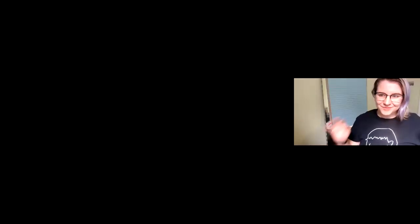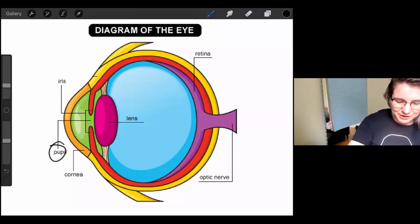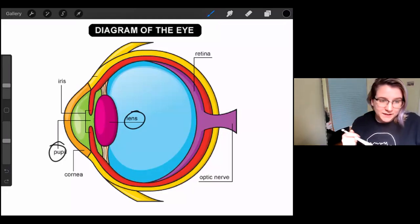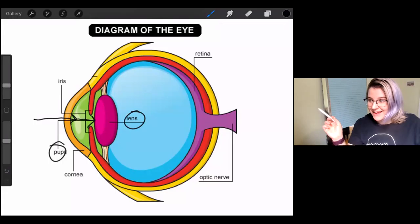Let's go back to our diagram. All right. So we've discussed the cornea and the pupil and the iris. Let's continue moving further inside the eye and talk about the lens, which is this pink looking part right here. So once the light goes through the cornea and then through the pupil, it hits the lens.